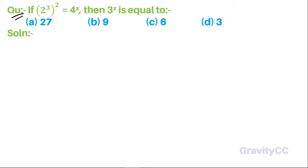If 2 to the power 3 to the power 2 is equal to 4 to the power x, then 3 to the power x is equal to which option?